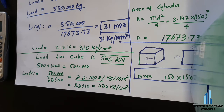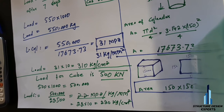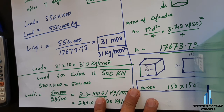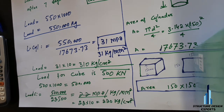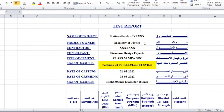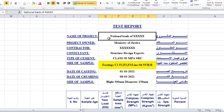I hope you understand. Now we move to designing an Excel sheet for this load calculation — for the company, showing how to design it for 7 days and 28 days. This is the test report format. The format includes: name of the project, project owner, contractor, consultant, type of cement, size of sample, date of casting, date of crushing, and type of sample.